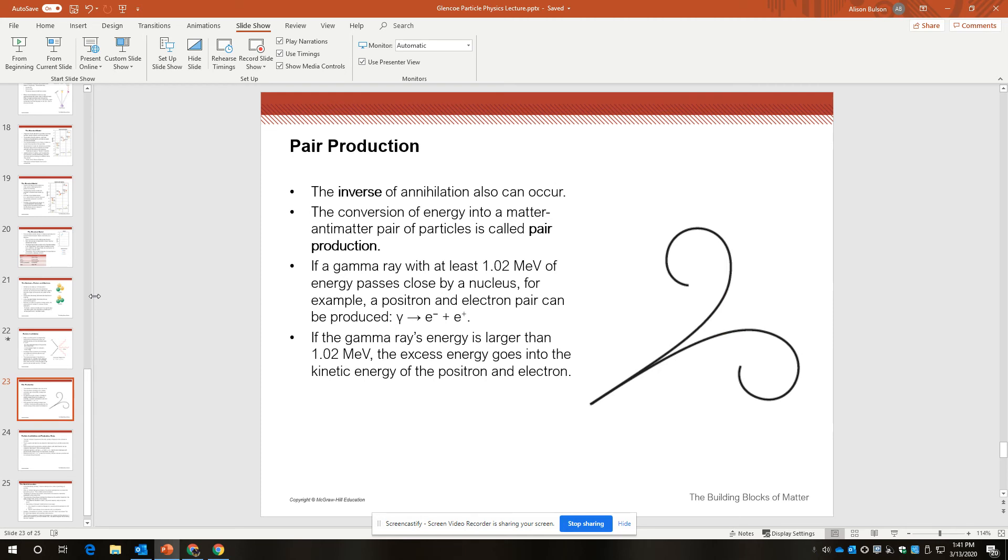So pair production. This is the weird part. If you can have a particle-antiparticle touch and annihilate, if you have gamma rays with enough energy hanging out together, a particle-antiparticle pair can spontaneously be transformed from that energy. And we call that pair production.